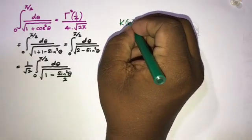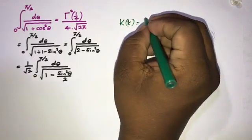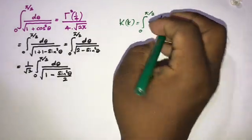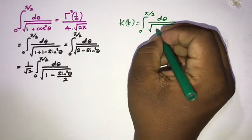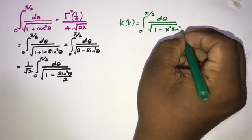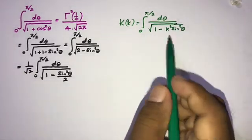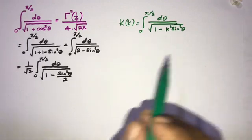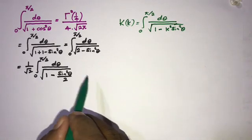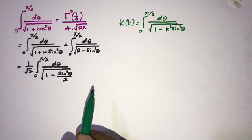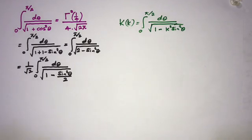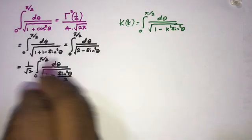This form is familiar because we know the formula K(k) equals the integral from 0 to π/2 of dθ over √(1 minus k² sin²θ). We recognize this as the complete elliptic integral of the first kind. However, in this question we need to reach the answer gamma squared of 1/4, so we will use substitution.